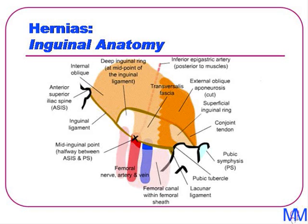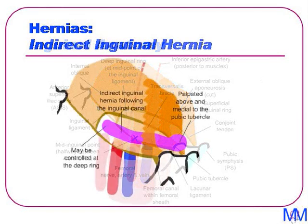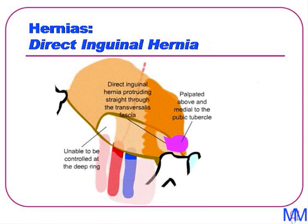The most common type of hernia is the inguinal hernia, which can come in two types: direct or indirect. Of the two, the indirect inguinal hernia is the most common because it follows the normal path of the contents of the inguinal canal — in the male the spermatic cord, and in the female the round ligament. An indirect inguinal hernia first goes through the deep inguinal ring, traverses the inguinal canal, and then comes out through the superficial inguinal ring where it is palpated. Conversely, a direct inguinal hernia emerges straight through a weak posterior wall of the transversalis fascia.